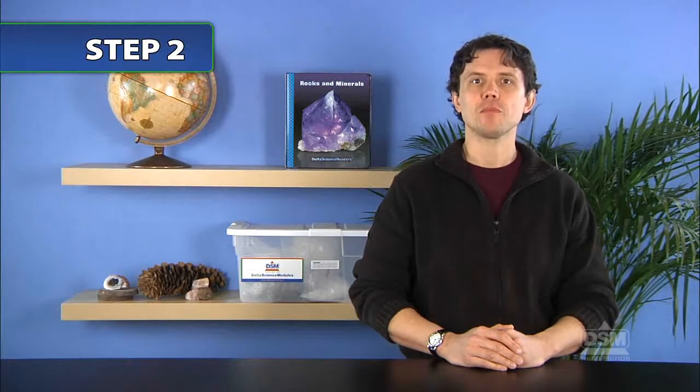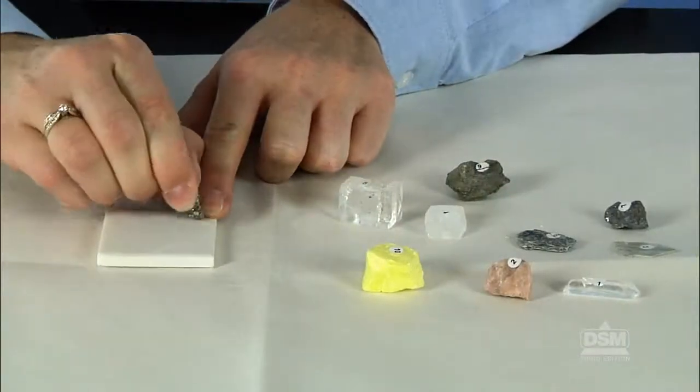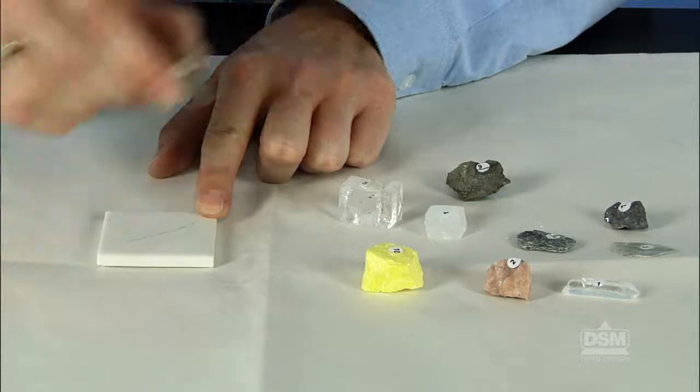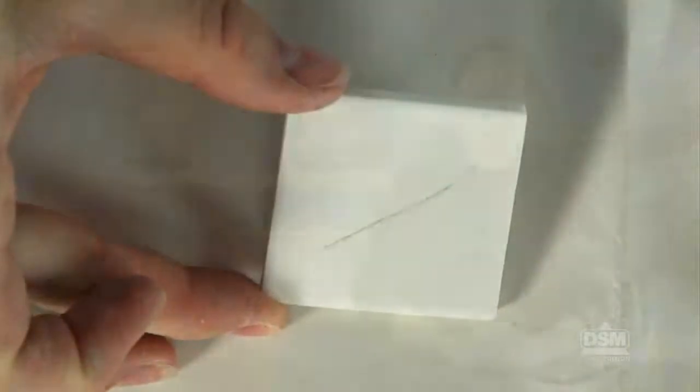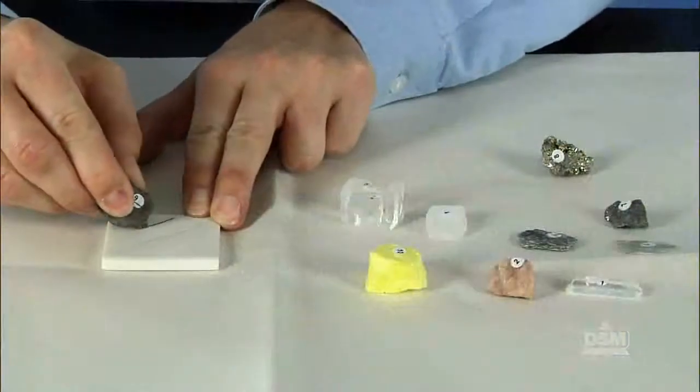Next, demonstrate how to perform the streak test on one of the mineral specimens. Pick up one of the specimens and drag the specimen across the streak plate. To obtain a good streak, vary the amount of pressure, but be careful not to damage the specimen. Keep in mind that several streaks may be necessary to obtain consistent results.